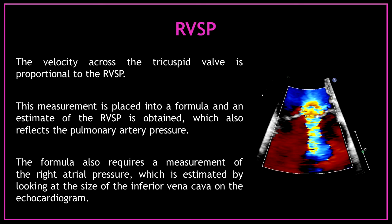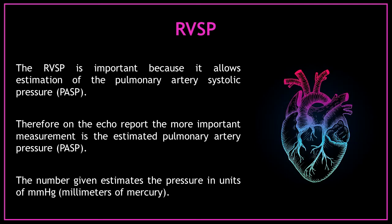The velocity across the tricuspid valve is proportional to the right ventricular systolic pressure. This measurement is placed into a formula and an estimate of the right ventricular systolic pressure is obtained, which also reflects the pulmonary artery pressure. The formula also requires a measurement of the right atrial pressure, which is estimated by looking at the size of the inferior vena cava on the echocardiogram. The right ventricular systolic pressure allows estimation of the pulmonary artery systolic pressure, and on the ECHO report the more important measurement is the estimated pulmonary artery systolic pressure — given in units of millimeters of mercury.